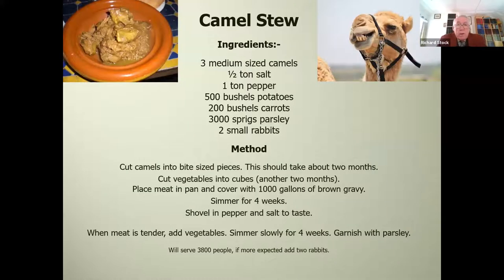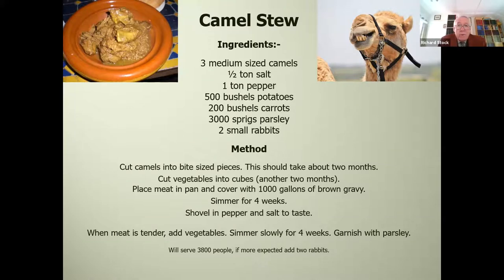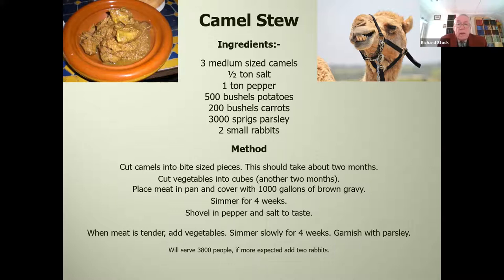If you want something that's total humour, there's a recipe for camel stew — this does exist, although I haven't tried it. The ingredients are thoroughly overdone, but it's a way to conclude, particularly with a non-philatelic audience, telling part of the story about the camel postman. I particularly like the bit about 'two small rabbits' and that it will serve 3,800 people — and if more people are expected, add the two rabbits.